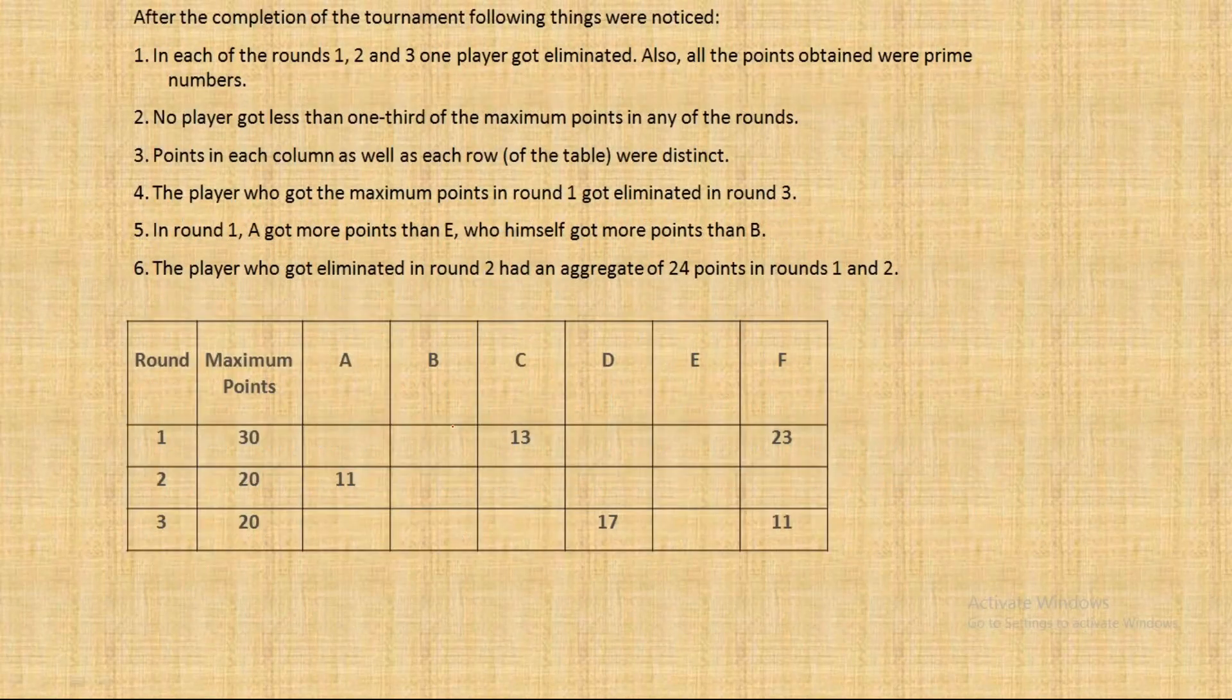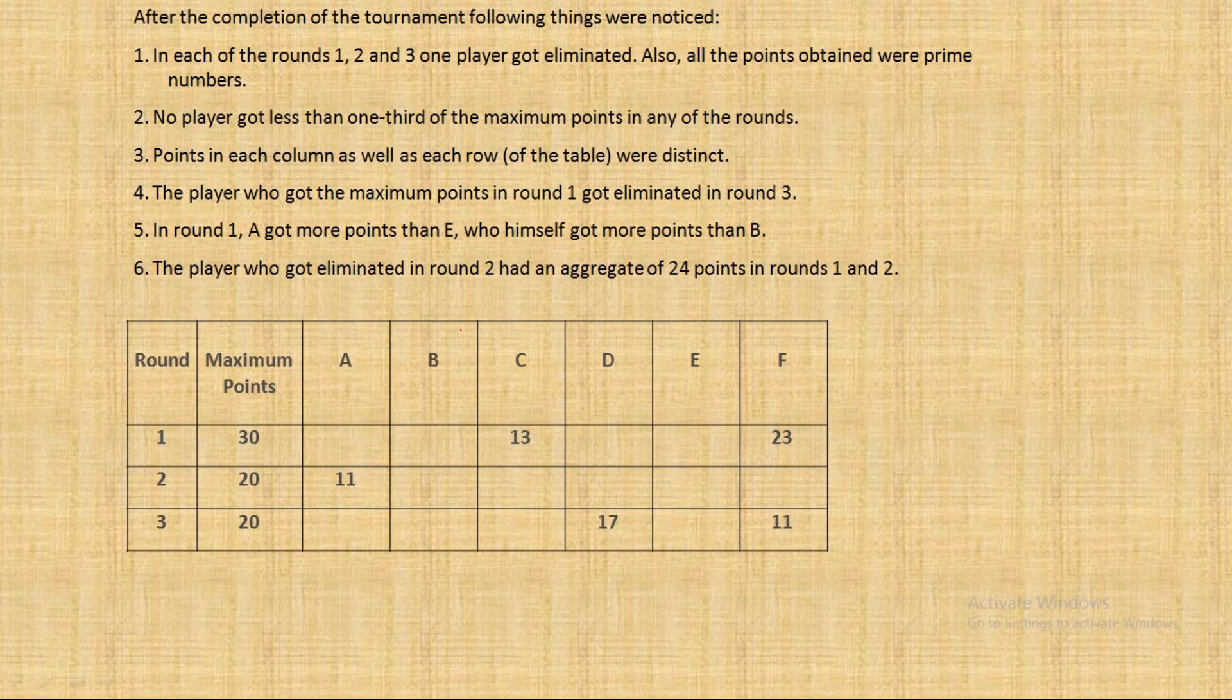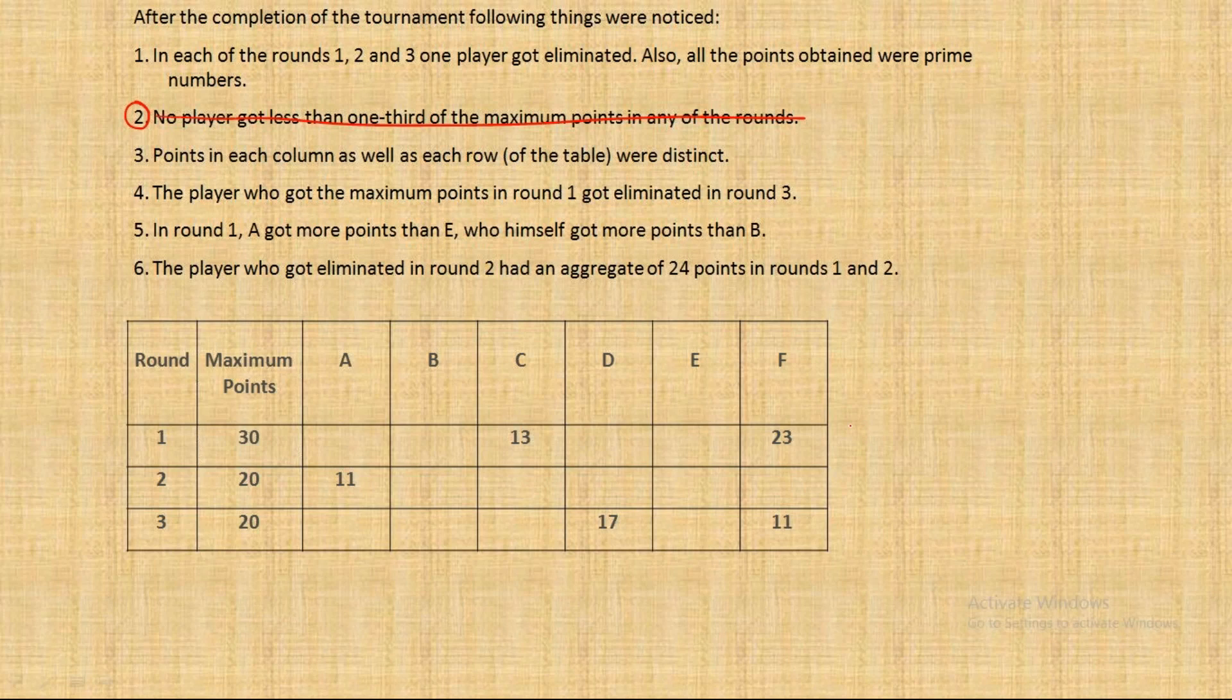First I want to think about the table. I will try to make the table much better. Let us see which points are of maximum utility. I would like to take something from point two first: no player got less than one third of the maximum points, which means that suppose in round one the maximum points are 30, that means nobody got less than one third, means less than 10.